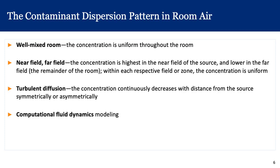Next, we need to understand the contaminant dispersion pattern. For simplicity, we start with the well-mixed room assumption, which assumes the concentration is uniform throughout the room at all points in time. The second, slightly more complicated dispersion pattern is the near field and far field model, which assumes concentration is highest near the source and lower in the far field. Within each respective zone the concentration is uniform — so in the well-mixed room we have one box, and in the near field/far field model we have two boxes, one within the other.